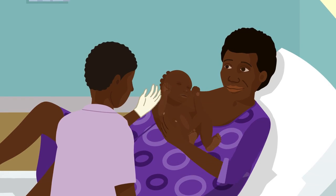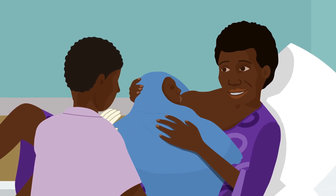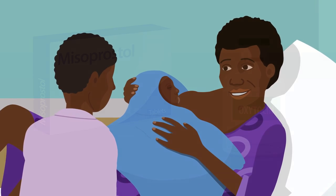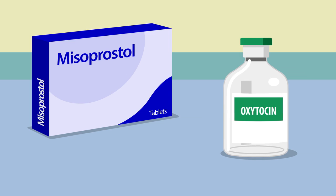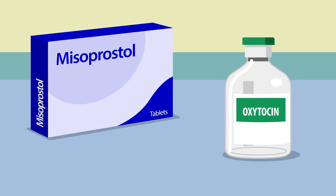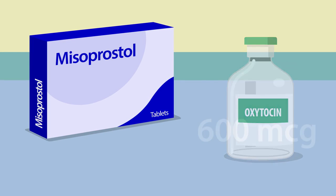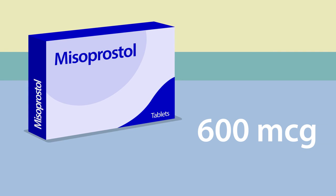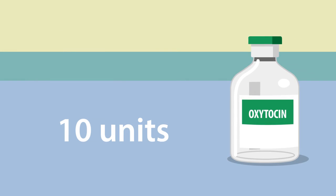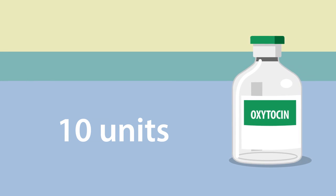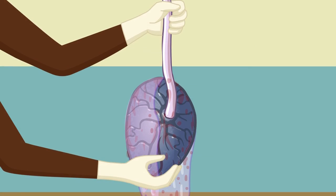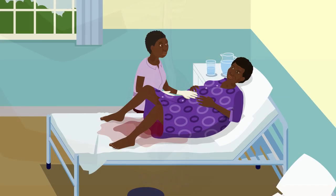Grace helps to deliver Mary's baby, then gives drugs to help the uterus to contract. Grace gives 600 micrograms of misoprostol, or an injection of 10 units of oxytocin. But once the placenta is delivered, Mary begins to bleed.